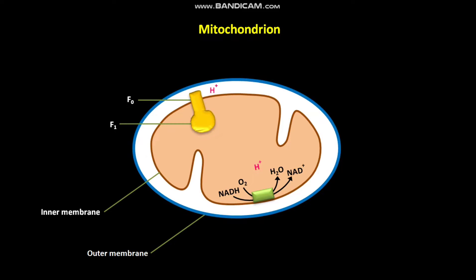The movement of electrons through the membrane carriers is coupled to the pumping of H+ ions from the matrix to the intermembrane space of the mitochondrion. Due to this H+ ion pumping, the H+ ion concentration increases in the intermembrane space, and the H+ ion concentration decreases in the matrix of the mitochondrion.